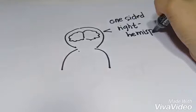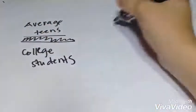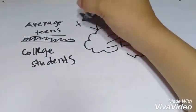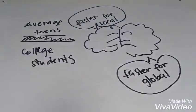There were two types of tests, the local and the global. For the average teens and college students, the left brain hemisphere was faster for local matches, and the right brain hemisphere was faster for global matches.